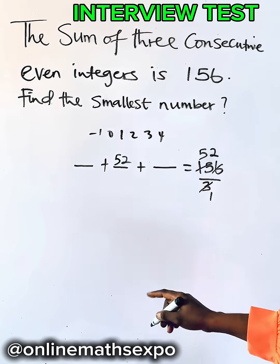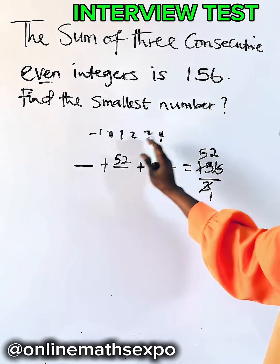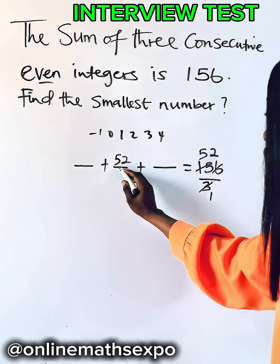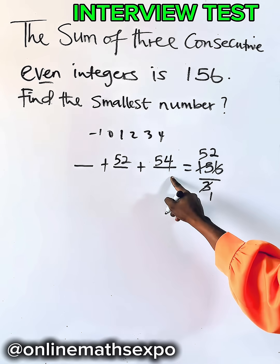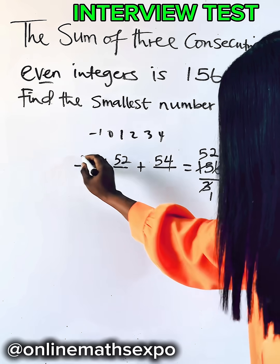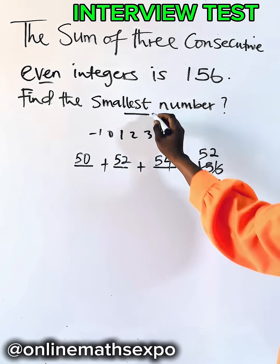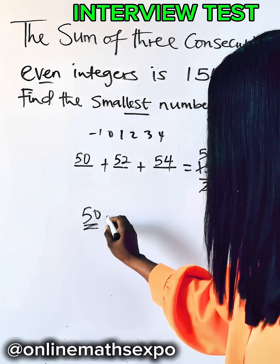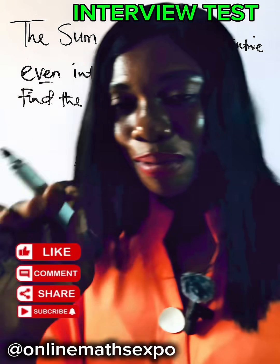So what should be the next number? You observe that because it's even, it increases by 2. So if this is 52, add 2 to this, it gives you 54. Then to get the one before, subtract 2, it gives you 50. So which one is the smallest? The smallest is 50. And that is this — I hope this helps you.